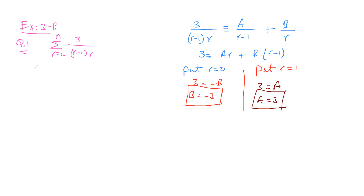Now the same question becomes the summation of the series from r equals two to n, which is going to be 3 over (r-1) minus 3 over r.